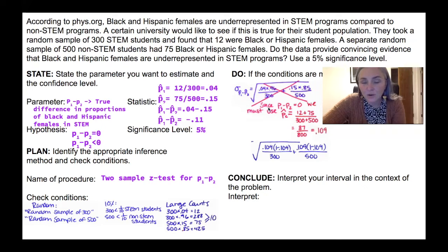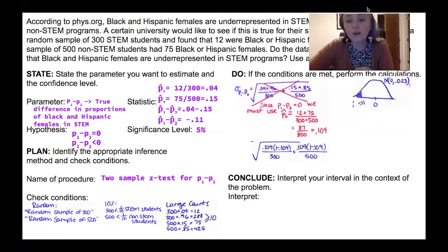And so that combined P value is 12 plus 75 over 300 plus 500. Please don't ask where that formula came from because if I'm being perfectly honest with you, I don't feel confident in my answer. So we get 87 out of 800, which is 0.109. And that is the number we use in both numerators in our standard deviation formula.